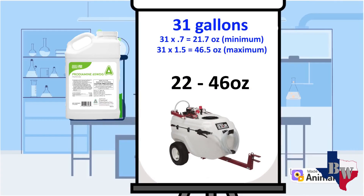We know our sprayer is 31 gallons. So if we multiply 31 times the low dosage of 0.7, that gives us 21.7 ounces. If we do 31 times the high dosage of 1.5, that gives us 46.5. Rounded to the nearest number, your dosage rate is anywhere from 22 to 46 ounces — 22 on the low side, 46 on the high side. Remember, that's by weight, and that's if you fill the entire sprayer full of water. I like to be on the low side, because if I want to really cover something I can just slow down, and that'll increase the application rate because I'm going slower.